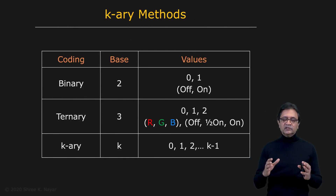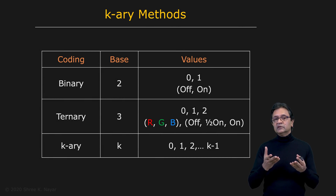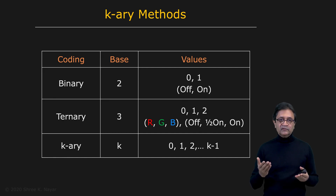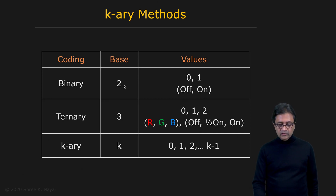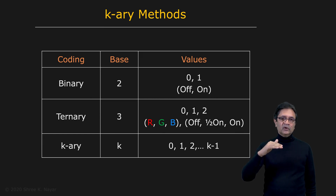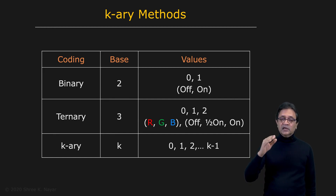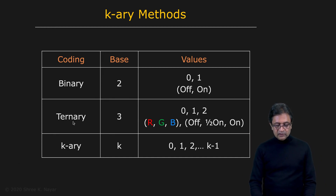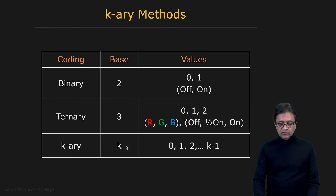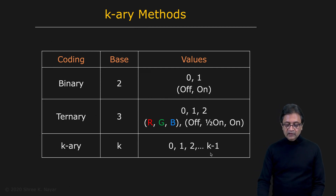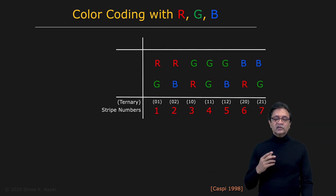This brings us to extending the approach to multiple levels of brightness. We talked about two levels — on or off — which is binary coding with base two. But you can go to a ternary system with three levels: perhaps off, a mid value, and a high value, or three different projected colors such as red, green, and blue. In the ternary system with base three, you can do even better. In general, you can go to K levels, where levels range from zero to K minus one. Let's look at the ternary system and doing structured light using color coding.